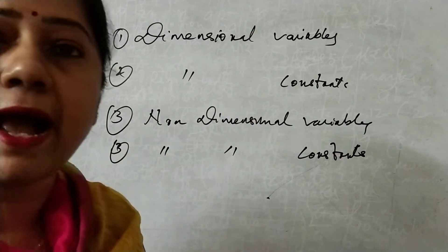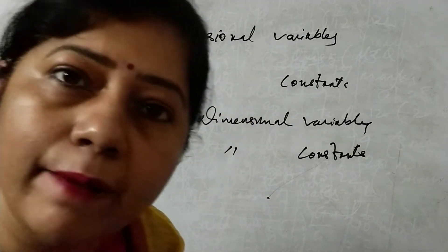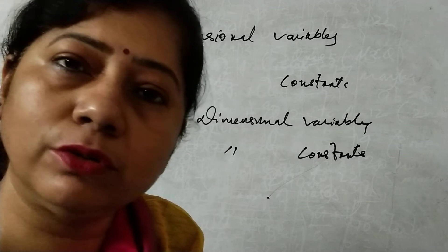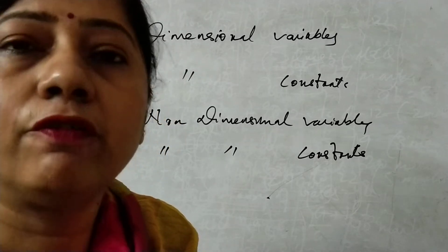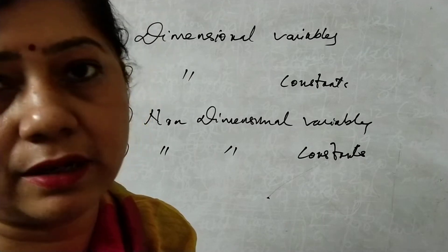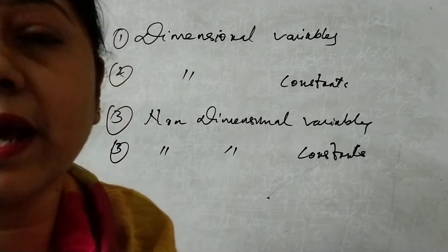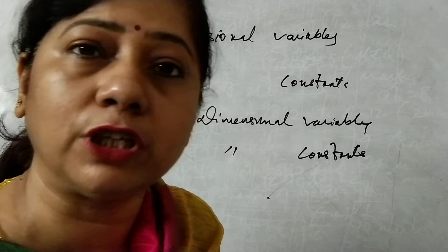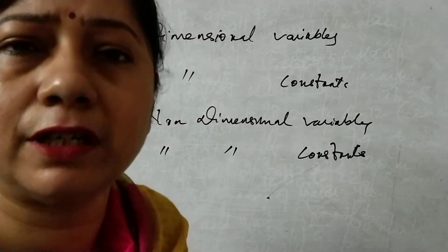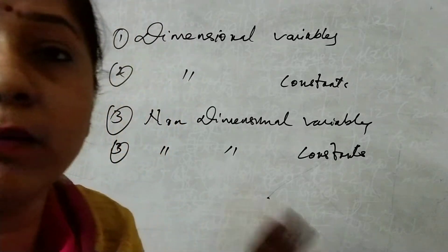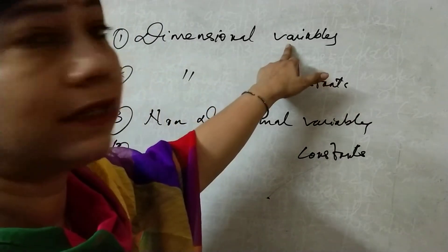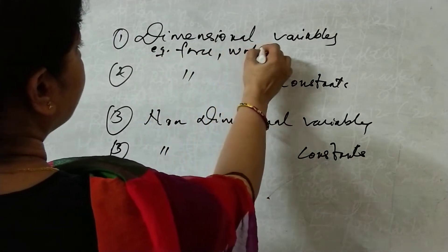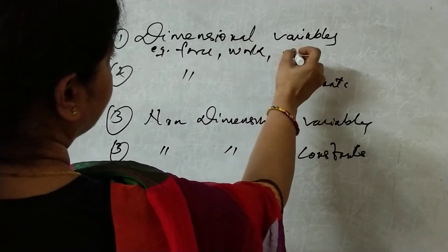Dimensional variables means they will have dimensions. Simply, the example is force. Force is Newton, and Newton is a derived quantity from its fundamental one — mass into acceleration — so kg·m/s², that is MLT⁻². They have dimensions, but the value is not fixed; it is variable. Force can have 100 Newton, 32 Newton, any value. Examples can be force, work, power, etc.